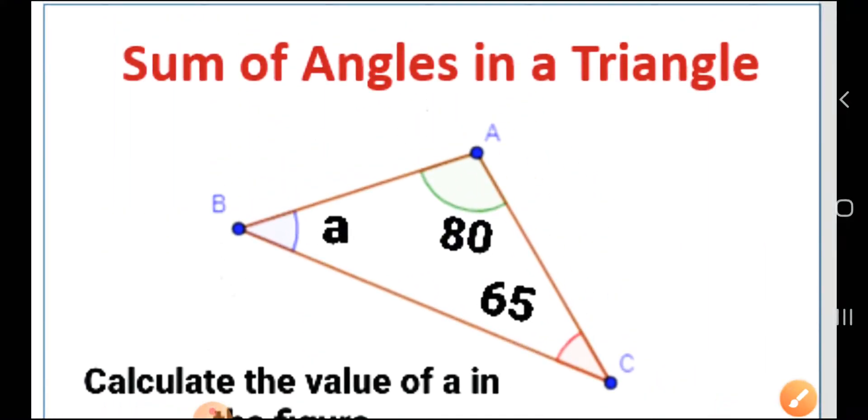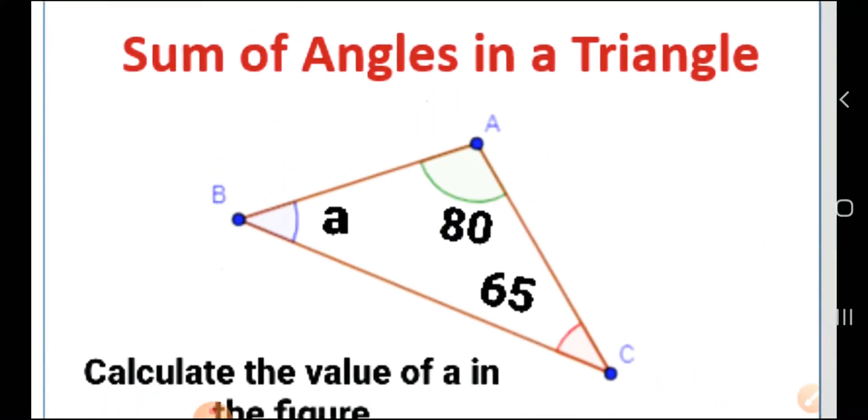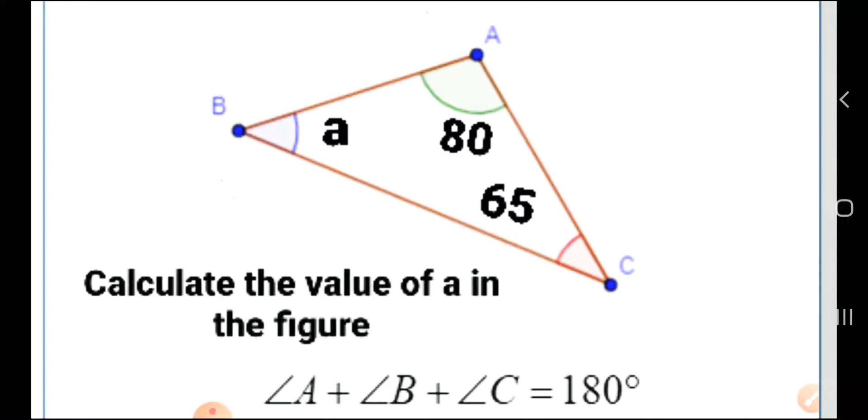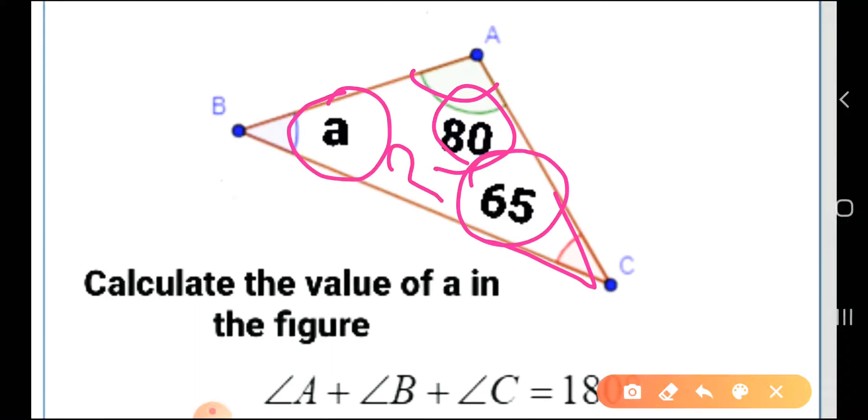You can see this is about the sum of angles in a triangle. Here it's already given that one value is 80 degrees and this one is 65 degrees. We need to find out this value. We don't know it yet, so we need to find out the value of a.